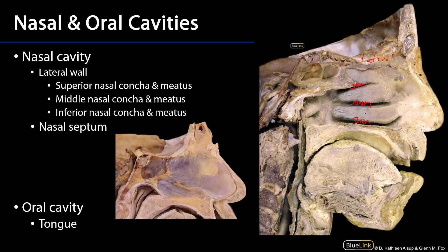These nasal meatuses are also regions where the paranasal sinuses and other areas such as the nasolacrimal duct are going to open into or drain into the nasal cavity. Now that nasal cavity has a medial wall as well, and that medial wall is the nasal septum. The nasal septum has three components: anteriorly we have the septal cartilage, postero-superiorly we have the perpendicular plate of the ethmoid, and inferiorly we have the vomer. This nasal septum is also invested by mucosa.